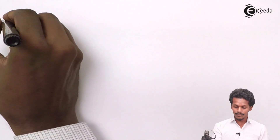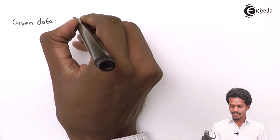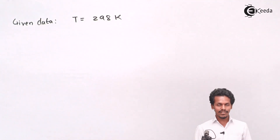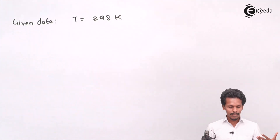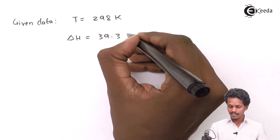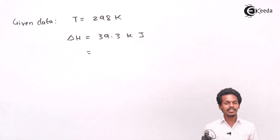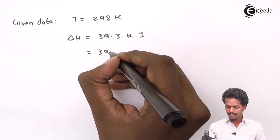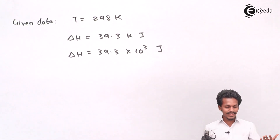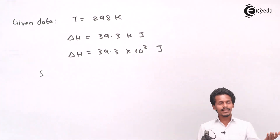The given data consists of temperature T = 298 Kelvin. They have also provided us the reaction, and delta H = 39.3 kilojoules. Since this is in kilojoules, I will convert it to joules for convenience: 39.3 × 10³ joules. Along with that, they have given us the entropies of the reactants as well as the product.